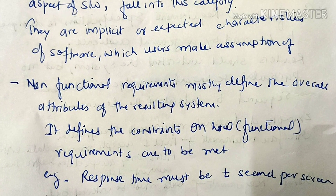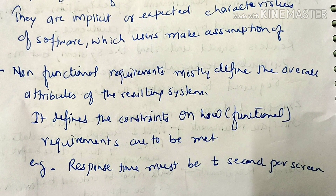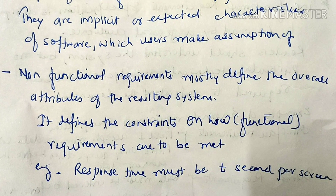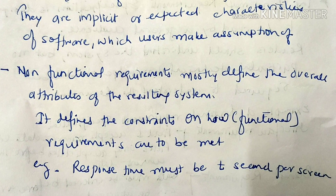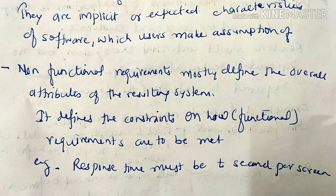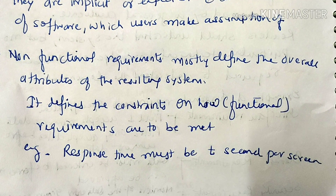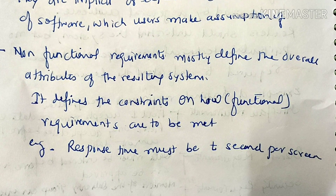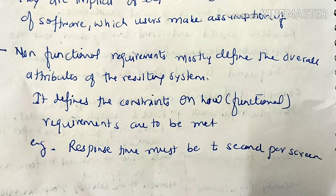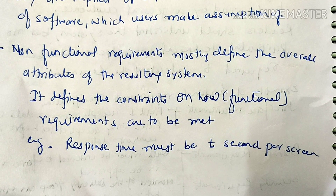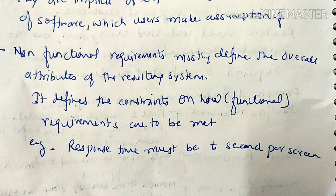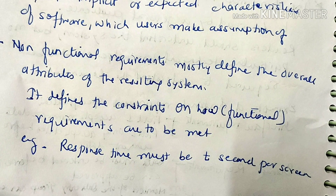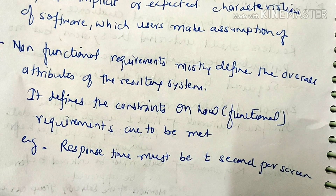Non-functional requirements define the constraints on how functional requirements are to be implemented — constraints on how functional requirements will be mapped. For example, response time must be 2 seconds per screen. These are functional requirement constraints that apply to which type of function should be performed.